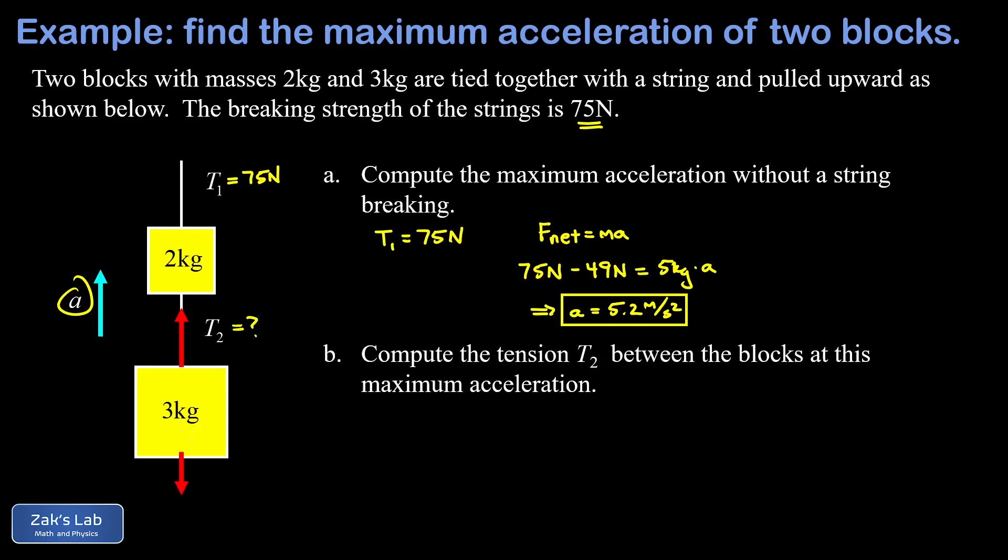We have T2 pulling up and that's actually what we're trying to find here, and then we have the force of gravity pulling down - that's given again by mg - but this time we're just talking about three kilograms. And when we run the numbers on this, three times 9.8 gives us 29.4 newtons for the force of gravity.